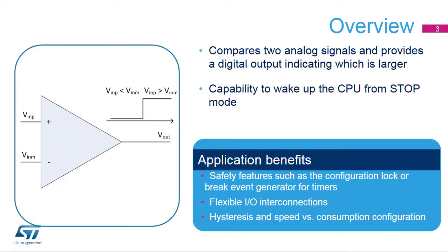The two comparators inside STM32 microcontrollers provide a binary output, which indicates if the analog voltage on the plus input is larger than the voltage on the negative input. It allows the MCU to react when the analog signal crosses a predefined threshold.